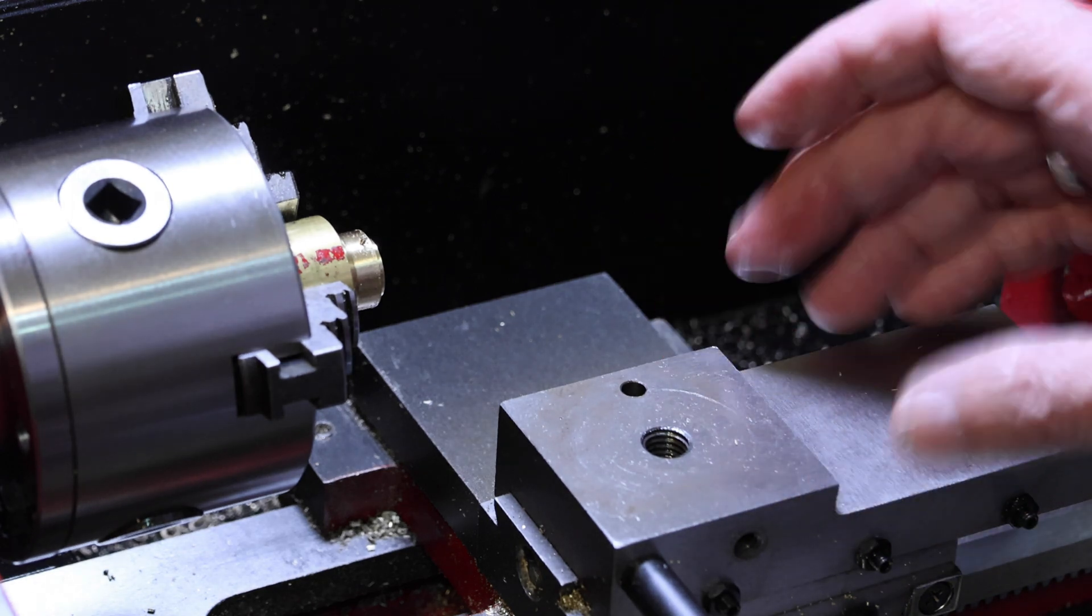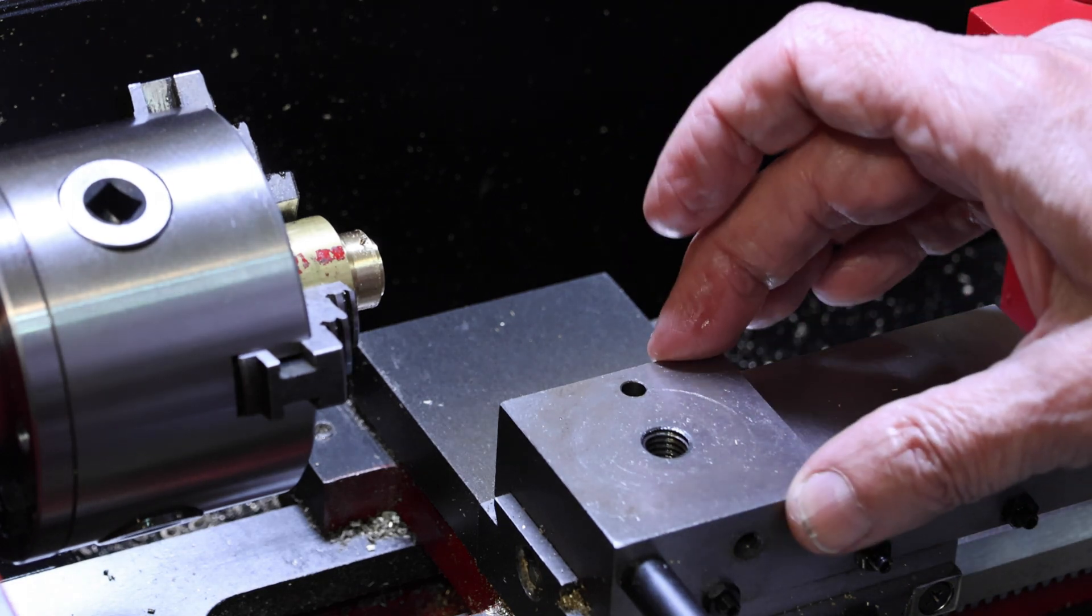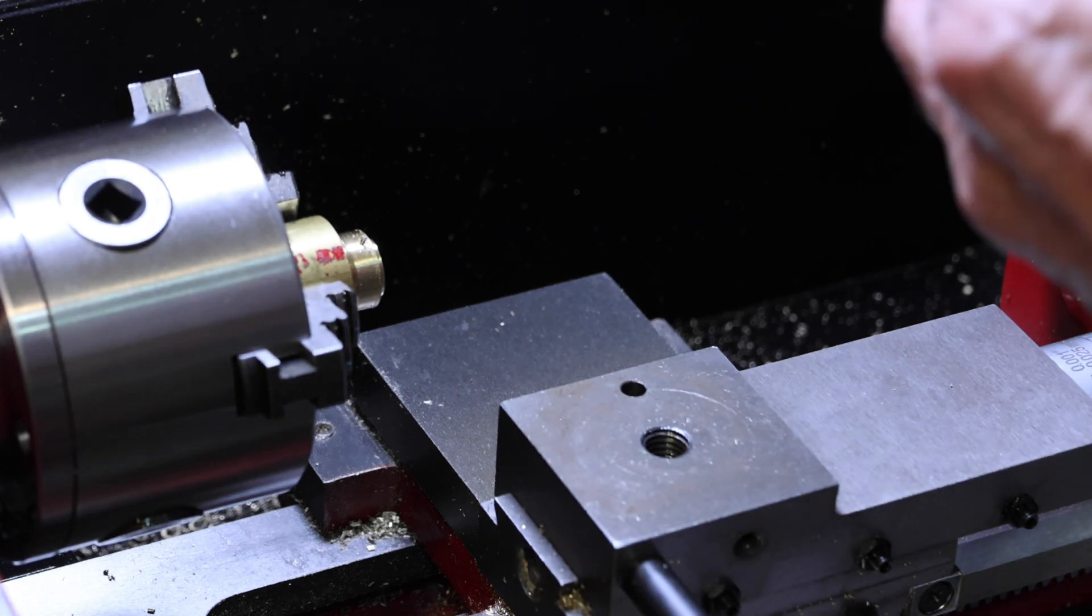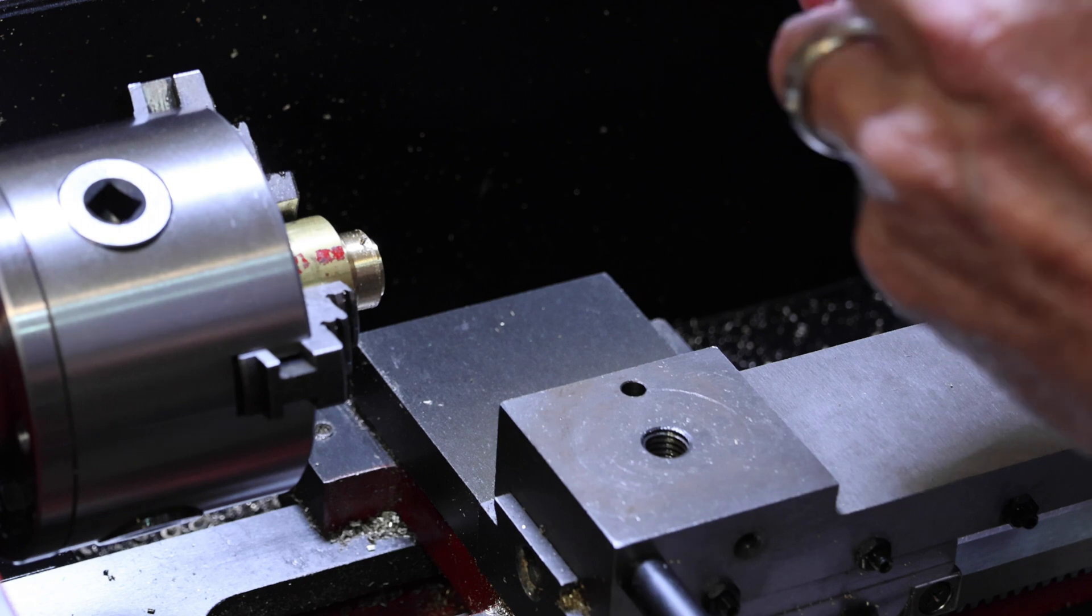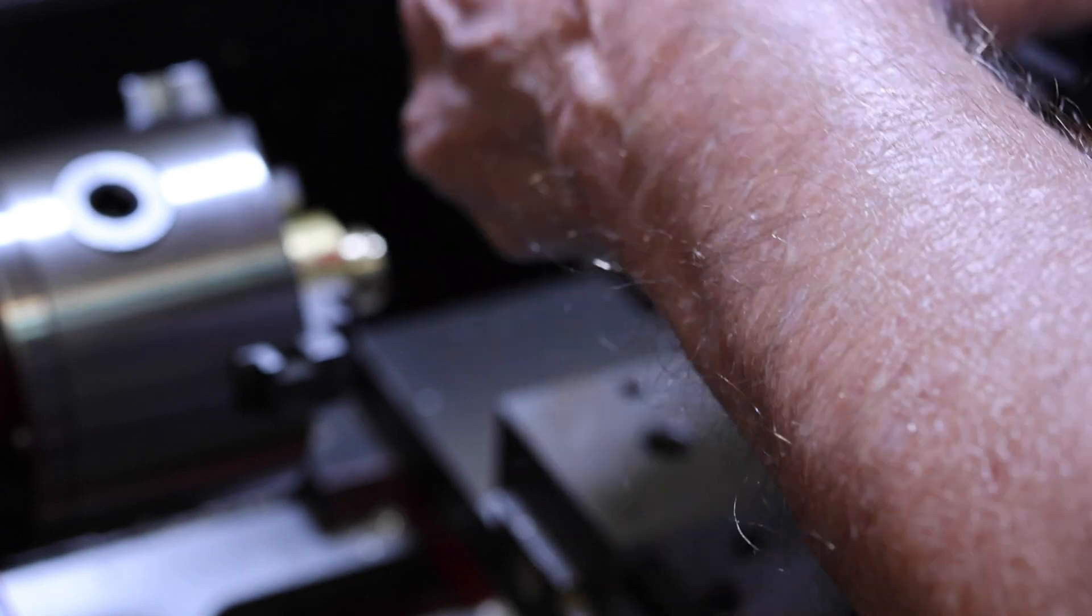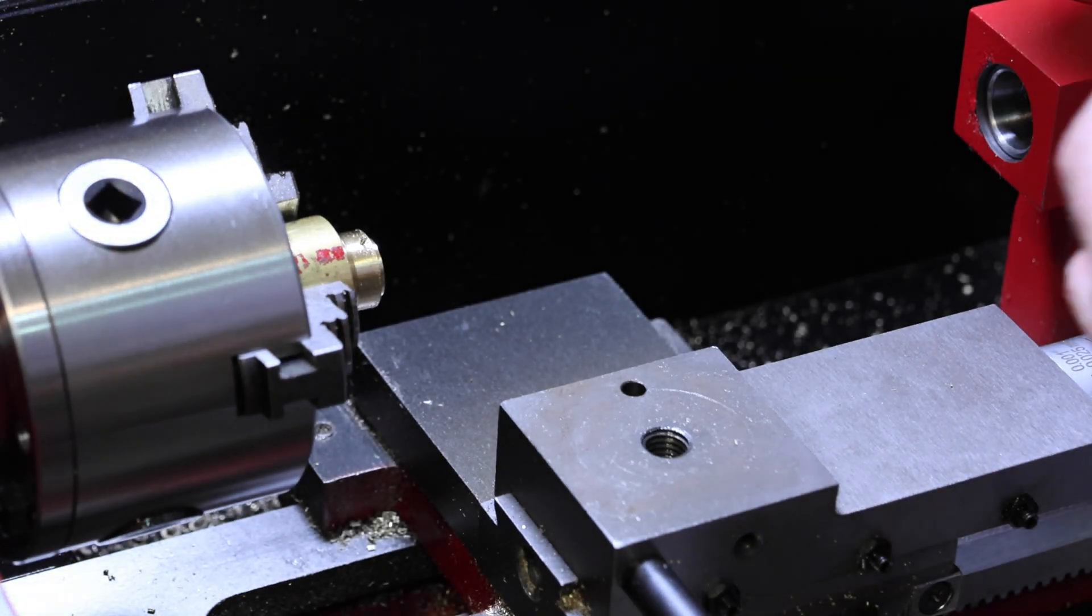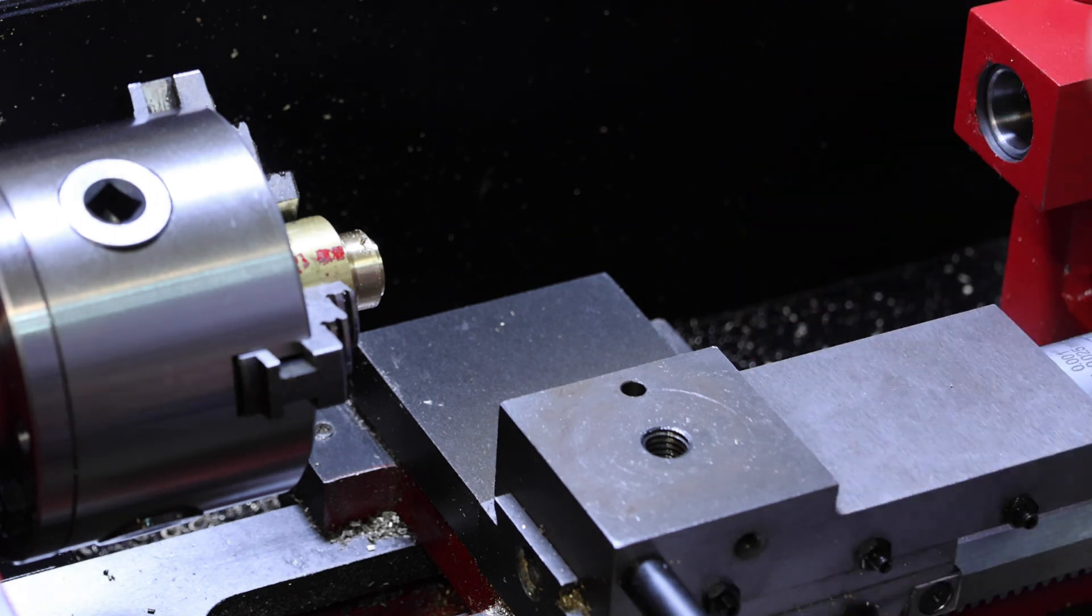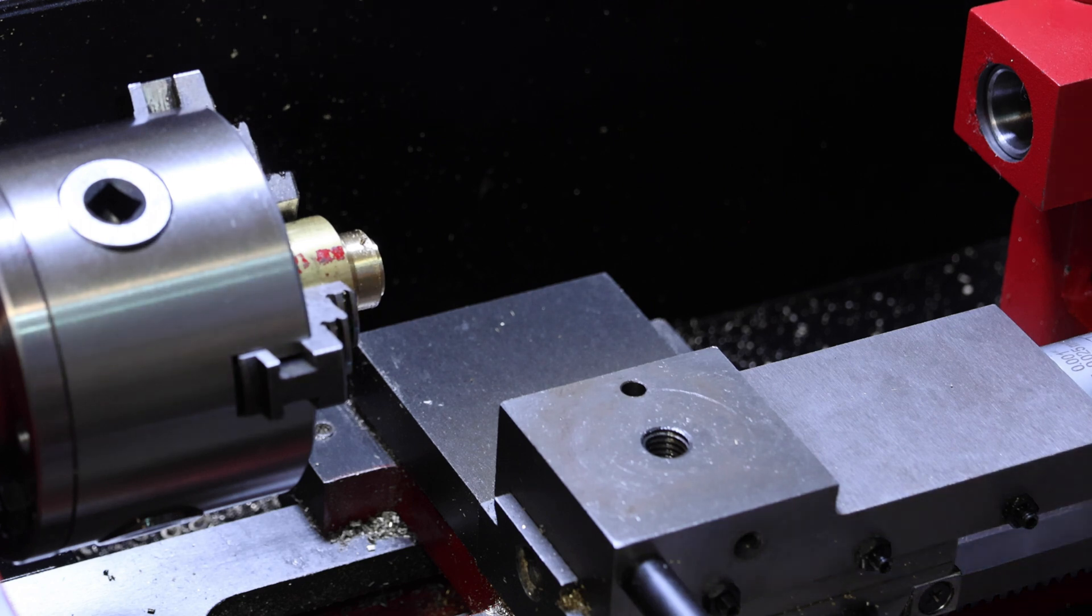Alright, so that just leaves the bare post here. So let's take the new quick change. And we need to remove this nut. Put that in the bag. And also we don't need this plate anymore. So the nut and plate go in the bag.